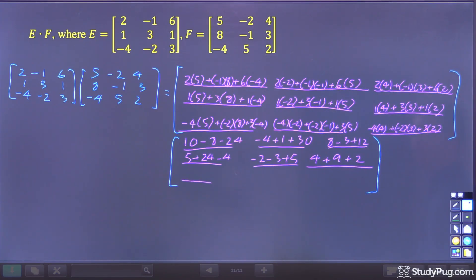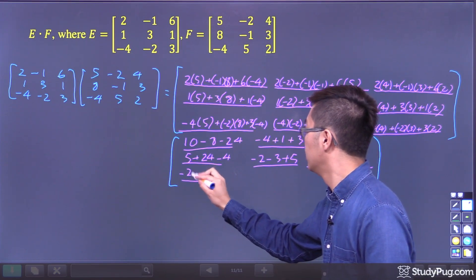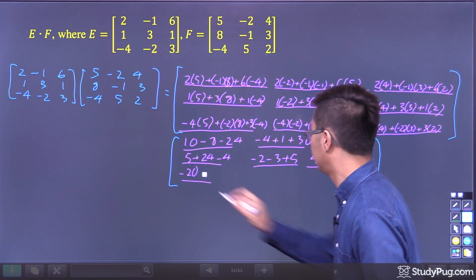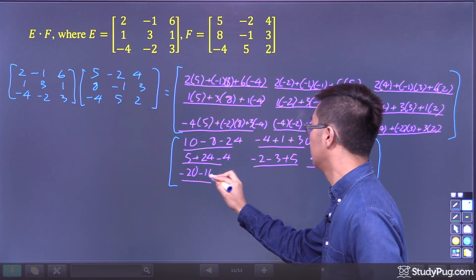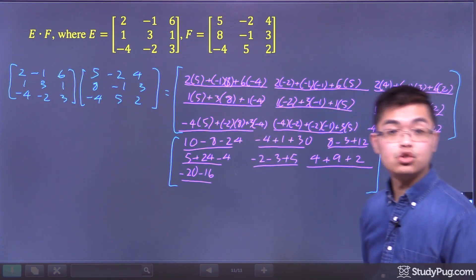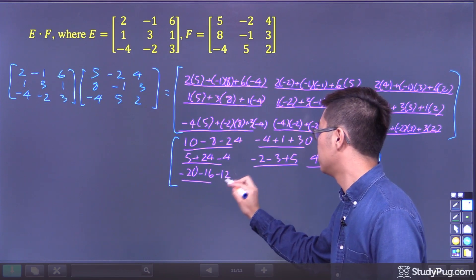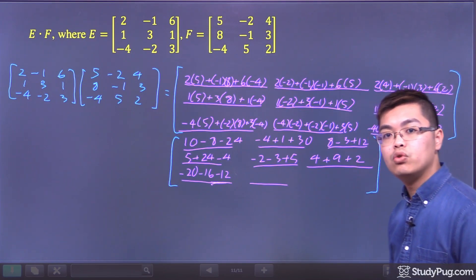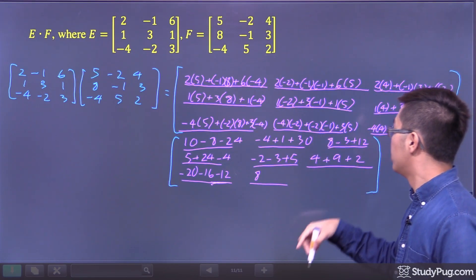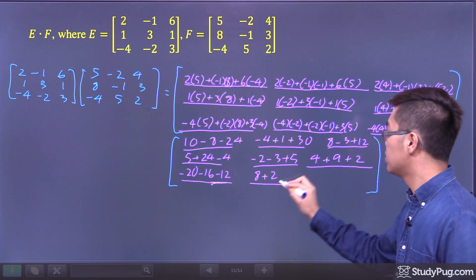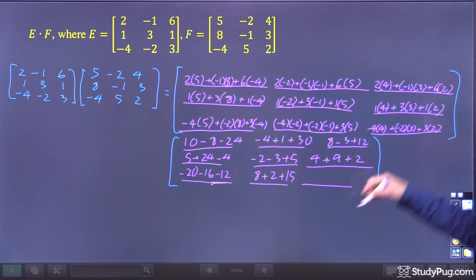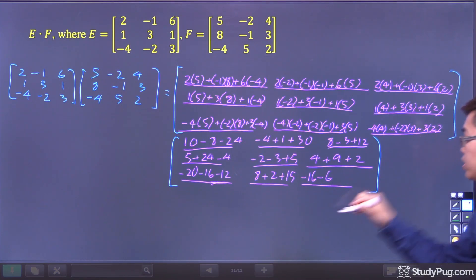For the third row: negative 4 times 5 is negative 20, plus negative 2 times 8 is negative 16, plus 3 times negative 4 gives minus 12. Next entry: negative 4 times negative 2 is 8, plus negative 2 times negative 1 is 2, plus 3 times 5 is 15. Last entry: negative 4 times 4 is negative 16, plus negative 2 times 3 is negative 6, plus 3 times 2 is plus 6.